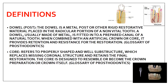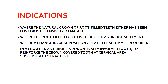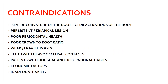The indications of post and core are: first, where the natural crown of the root-filled tooth has either been lost or is extensively damaged; second, where the root-filled tooth is to be used as a bridge abutment - when that tooth needs to be an abutment for construction of an FPD bridge, you need a post and core; third, where a change in the axial position is greater than 1 mm; and fourth, when the tooth is more prone to fracture.